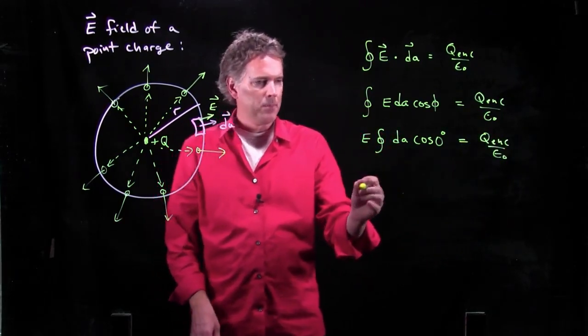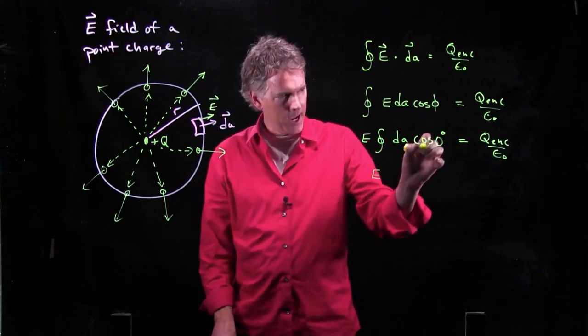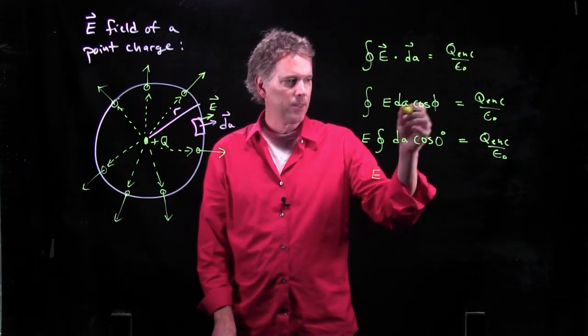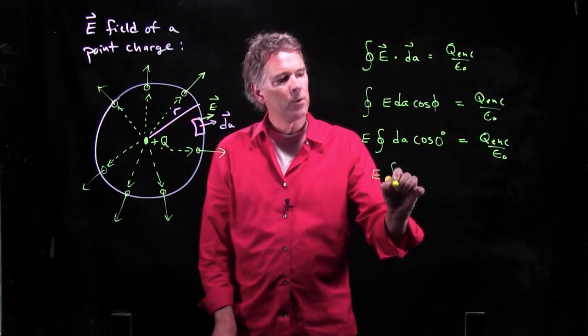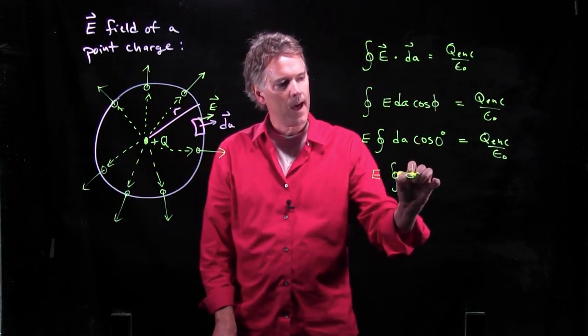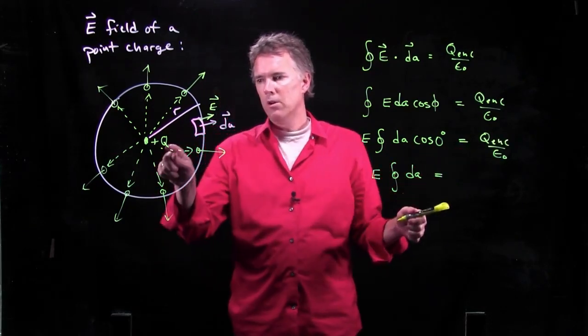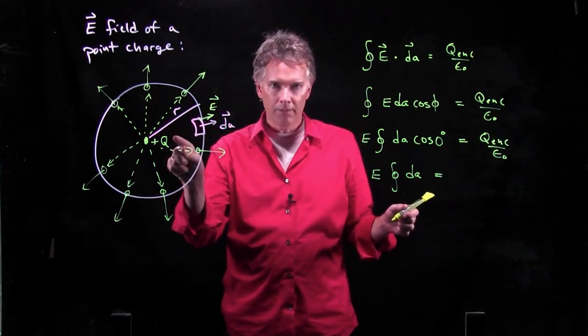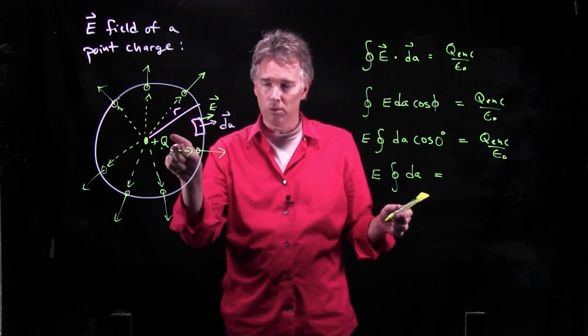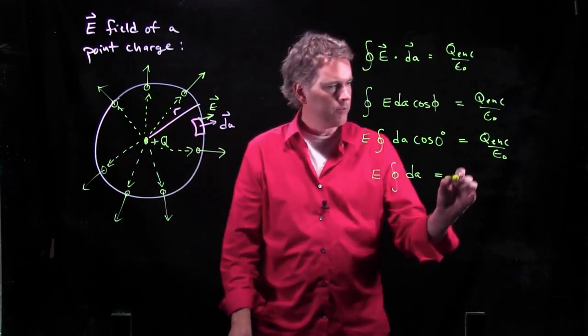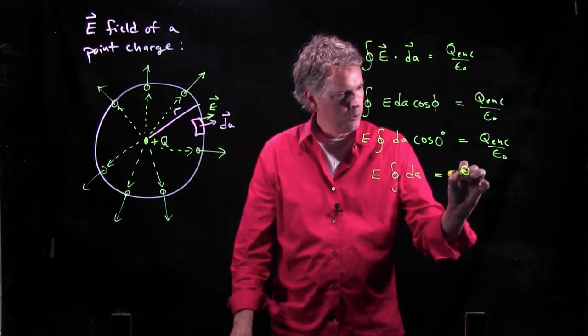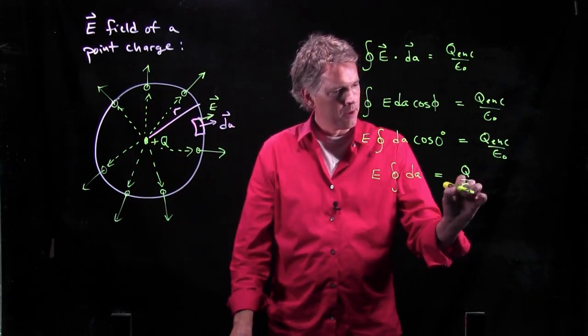What does this whole left side become? Well, cosine of theta, cosine of phi, if it's 0, that thing becomes a 1. And so we're just left with that. Over on the right side, q enclosed is just positive q, right? It's just one charge that's in there. Positive q. And so this becomes q over epsilon not.